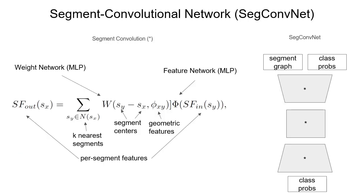We then apply a segment convolutional network to refine the semantic maps further. Inspired by PointConv, our segment convolution uses an MLP to predict the convolution kernel and another MLP to process the features.